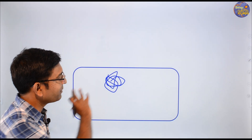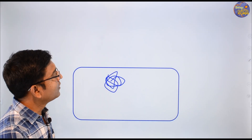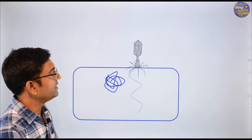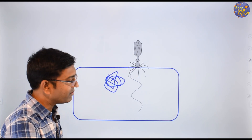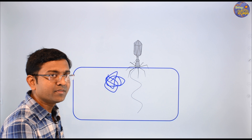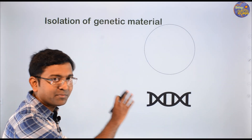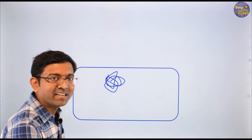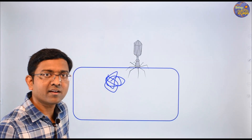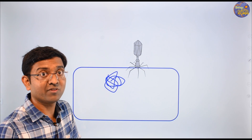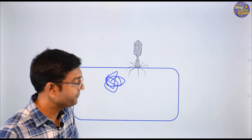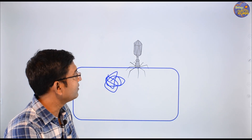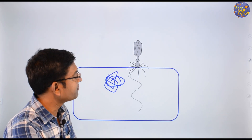We will start with bacteria. This is our bacteria, and bacteria is infected. There is a virus — the virus is infecting bacteria. Some viruses have the ability to infect bacteria. If they infect, they are infected and genetic material is released into the bacteria.